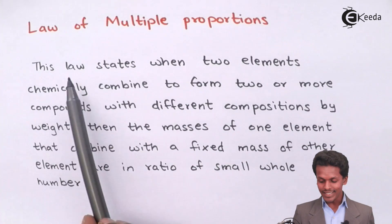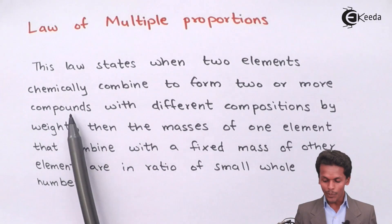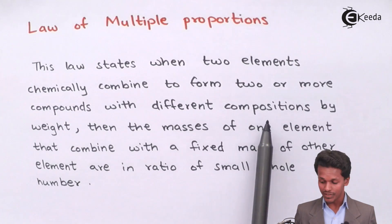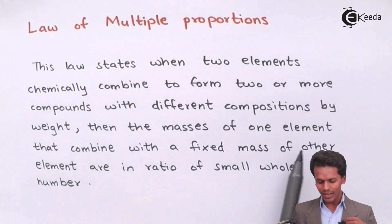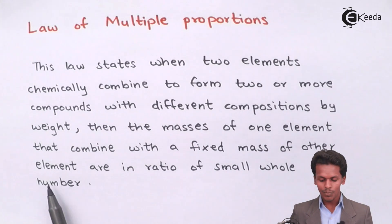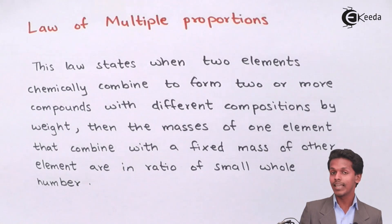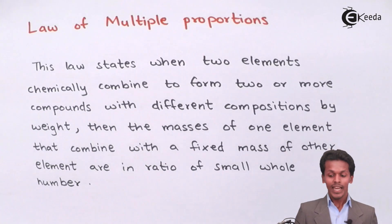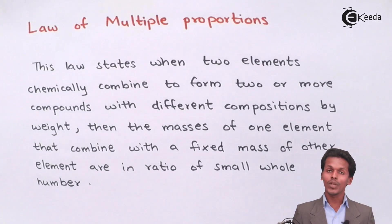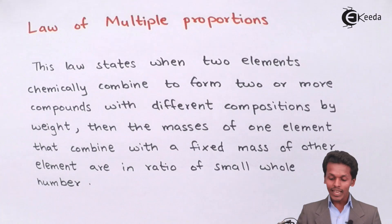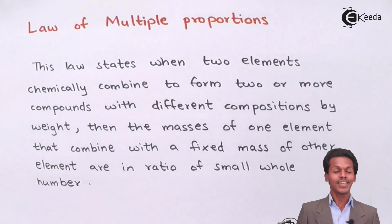The Law of Multiple Proportions states that when two elements chemically combine to form two or more compounds with different compositions by weight, then the mass of one element that combines with a fixed mass of the other element are in a ratio of small whole numbers. This definition can be hectic to understand, so let me give you a proper example, and then we will come back to this definition to verify whether the law is applicable.